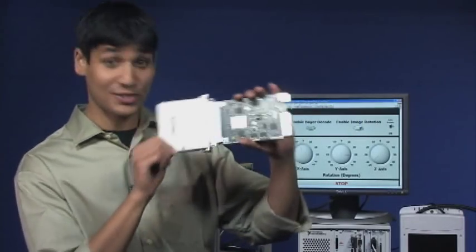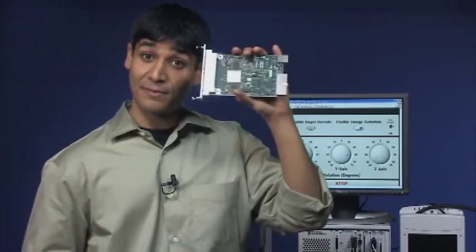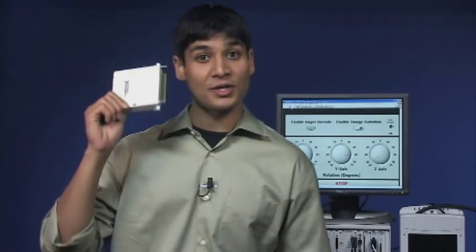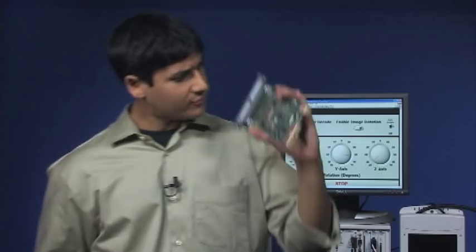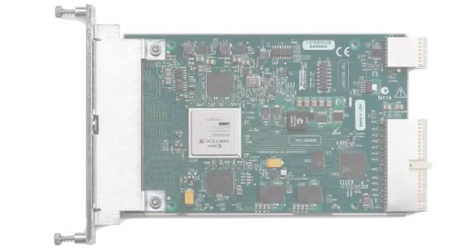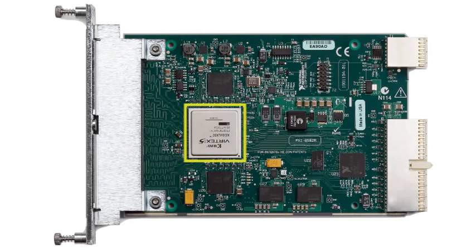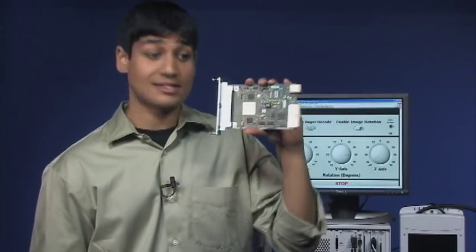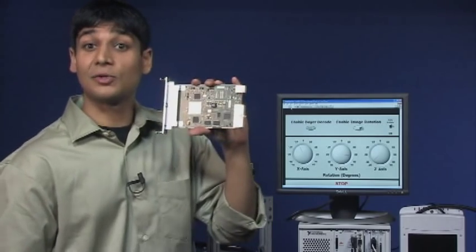FlexRio is made up of two parts, the FlexRio FPGA module and the FlexRio I.O. adapter module. The FlexRio FPGA module features a programmable Vertex 5 FPGA chip with up to 128 megabytes of onboard memory. It also has all the benefits of the PXI platform, which include timing, triggering, and synchronization.